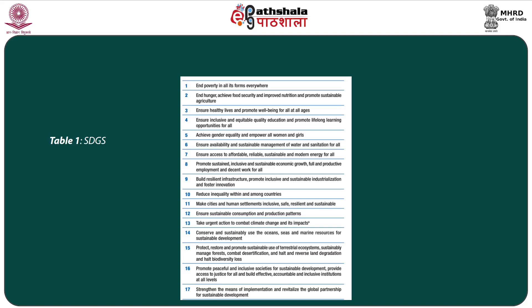Goal 15 also covers sustainably managing forests, combating desertification, halting and reversing land degradation, and halting biodiversity loss. Goal 16 talks about promoting peaceful and inclusive societies for sustainable development, providing access to justice for all, and building effective, accountable and inclusive institutions at all levels. Goal 17 talks about strengthening the means of implementation and revitalizing the global partnership for sustainable development.